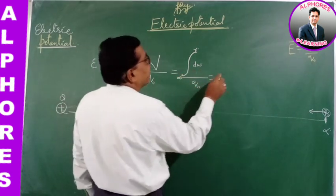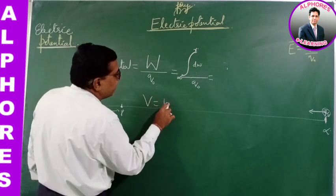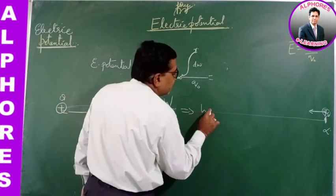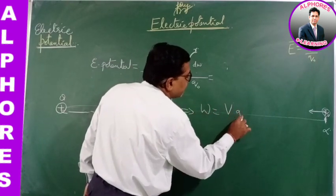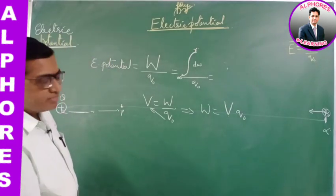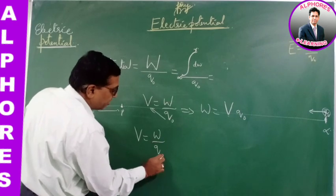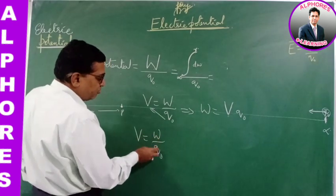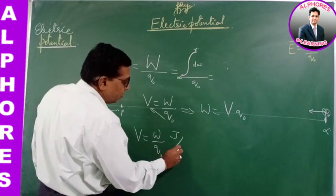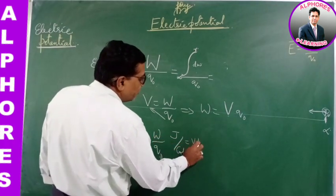So electric potential V = W/Q, meaning work done per unit charge. Cross multiplying: the work done in placing a test charge q₀ at a point where the potential is V is W = V·Q. Therefore, electric potential = W/Q₀.